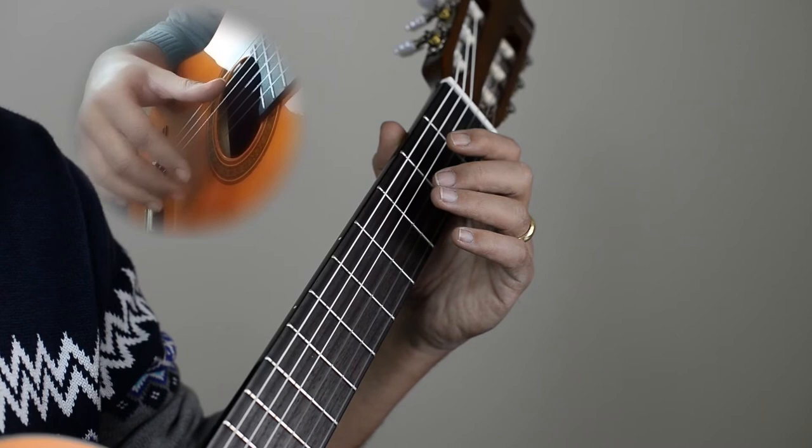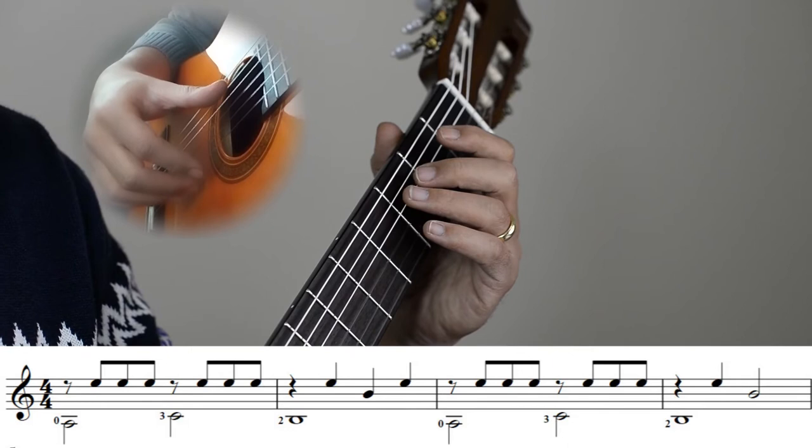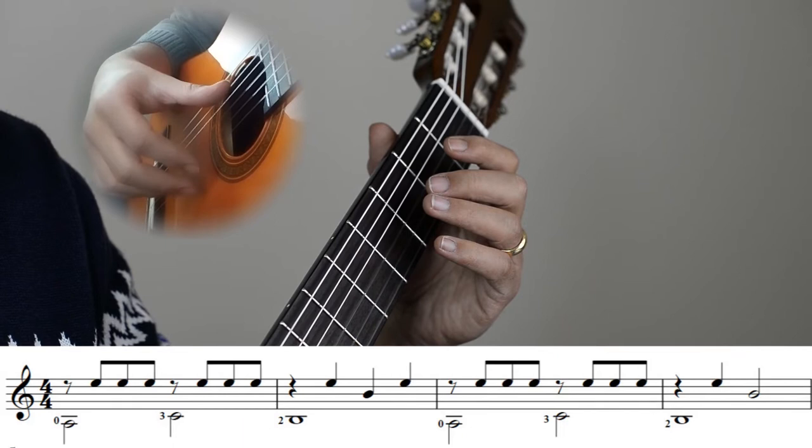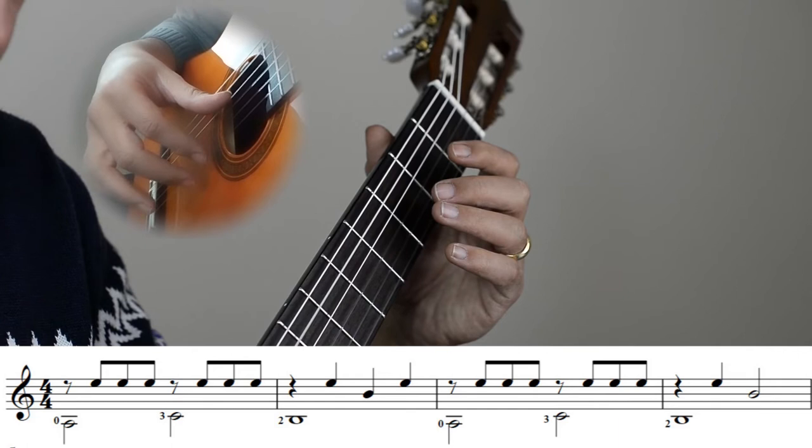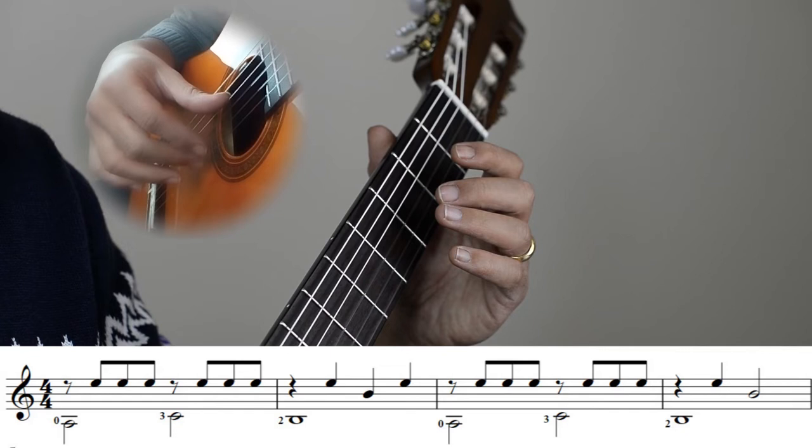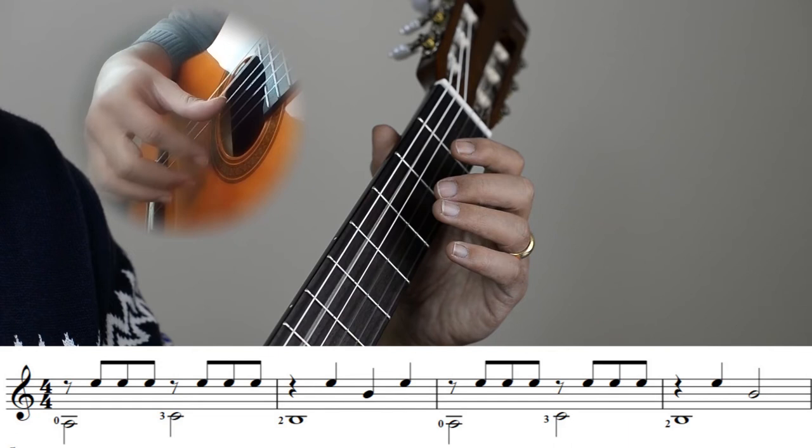Let's take a look at the first bar. We start with the A, the fifth string open with the thumb. You can play that rest stroke, and then you start with an I or an M, it doesn't matter. You can start M I M or I M I.